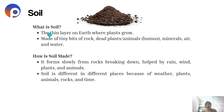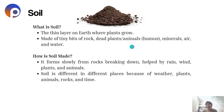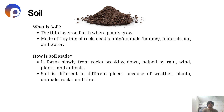Soil is a thin layer on the earth's surface on which plants grow. It is made of tiny bits of rock, dead plants and animals (called humus), minerals, air and water — all mixed together. Soil forms slowly from rocks breaking down, helped by rain, wind, plants and animals. Soil differs in different places because of weather, plants, animals, rocks and time.